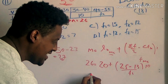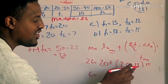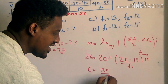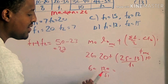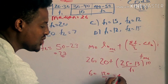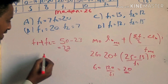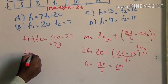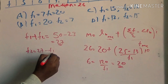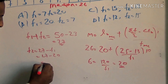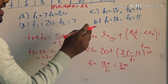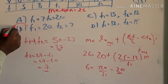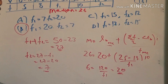26 minus 6 equals 25 minus 13, which is 12. So 12 times 10 is 120, over f1. f1 is equal to 120 over 6, which is 20. Then f2 equals 27 minus f1, which is 27 minus 20, equal to 7. So f1 = 20 and f2 = 7.